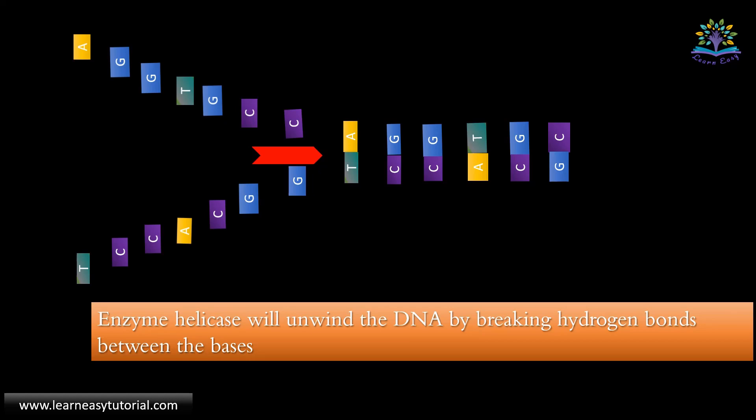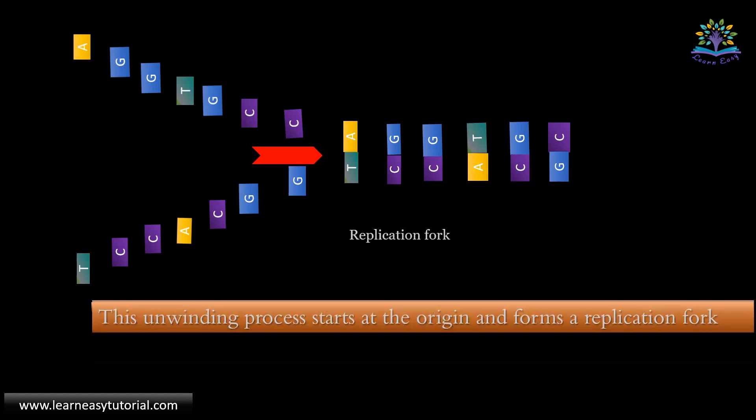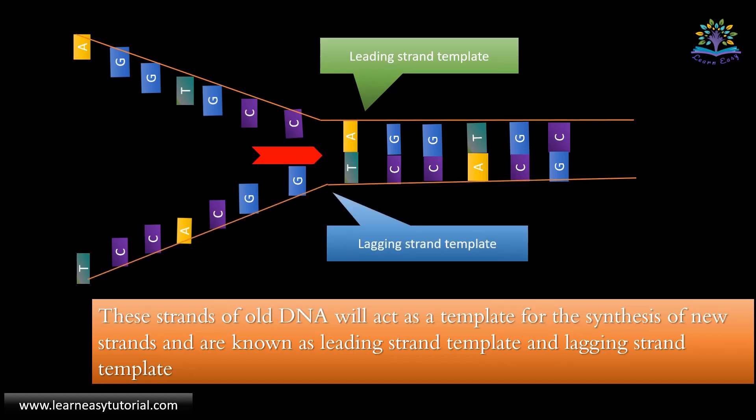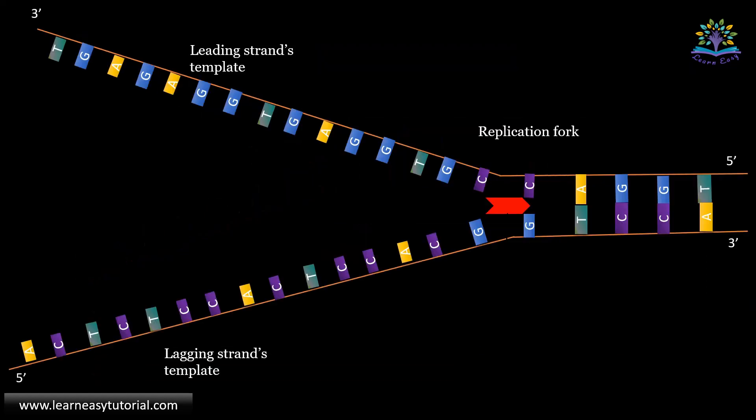You can see that when the DNA unwinds, the structure resembles a fork known as the replication fork. The strands of DNA formed will act as a template for the synthesis of new DNA strands and are known as leading strand template and lagging strand template.